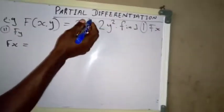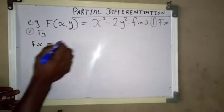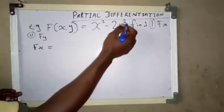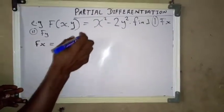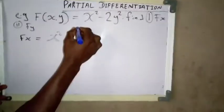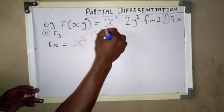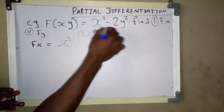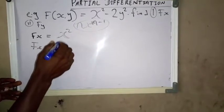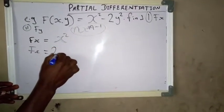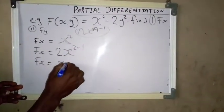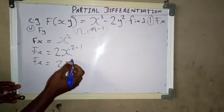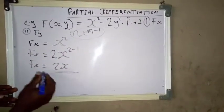To find f_x, anywhere you see x you will differentiate only x. Our x term here is x squared. We have the general formula: x^n differentiates to n times x raised to n minus 1. So our f_x equals 2 times x raised to 2 minus 1, which equals 2x. This is our answer for f_x.